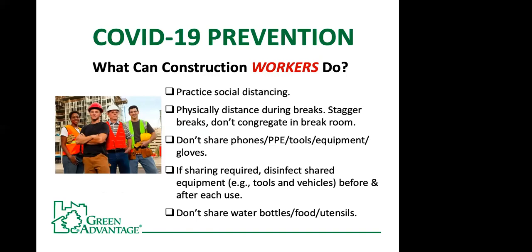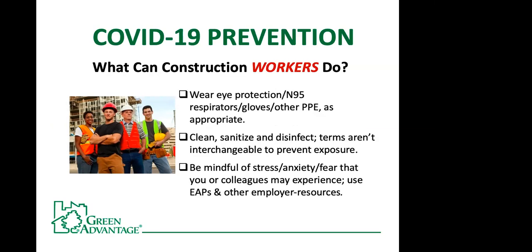Let's now look at some of the measures workers can use. First, social distancing while working, but also during breaks — breaks should be staggered and workers are advised not to congregate in break rooms. Workers should not share phones, PPE, tools, equipment, or gloves. Where sharing cannot be avoided, such as with tools and vehicles, shared equipment should be disinfected before and after each use. Water bottles, food, and utensils should also not be shared. Workers should wear PPE, including eye protection, N95 respirators, gloves, and other PPE as appropriate.